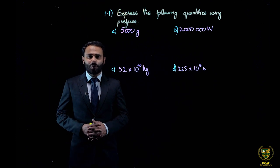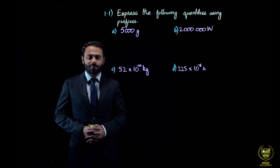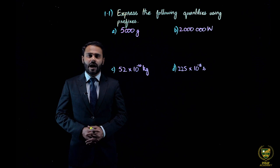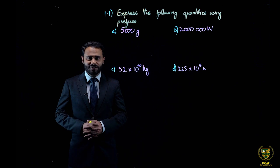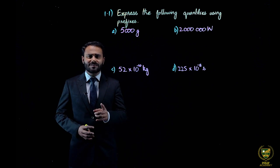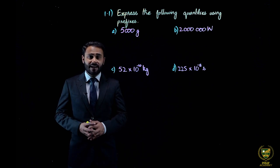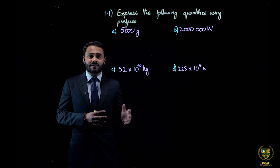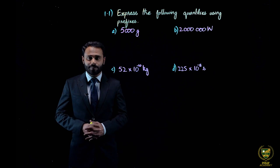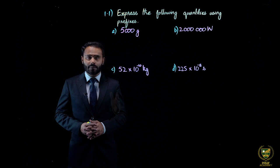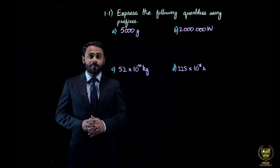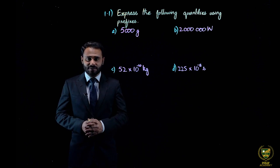Numerical number 1.1: Express the following quantities using prefixes. You have to express these quantities with prefixes. Prefixes are the words or letters that are added before system international units. As in part A, there is 5000 gram, so you have to use prefixes here.